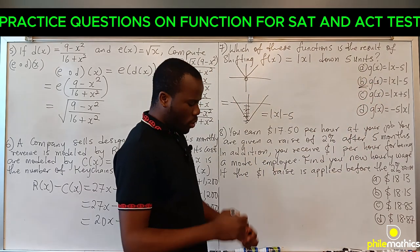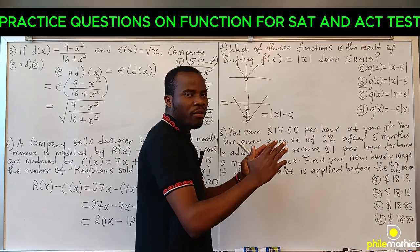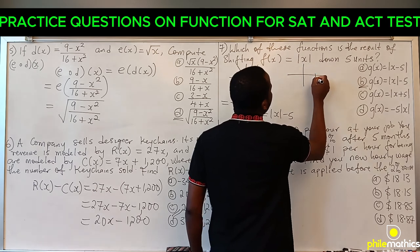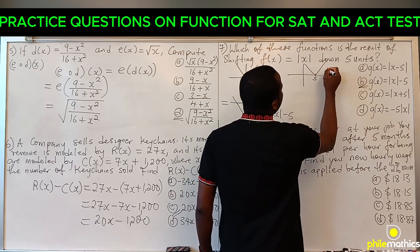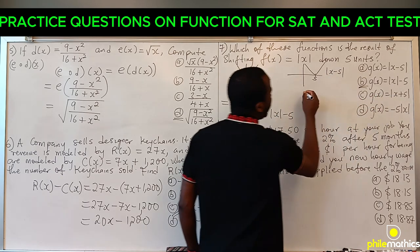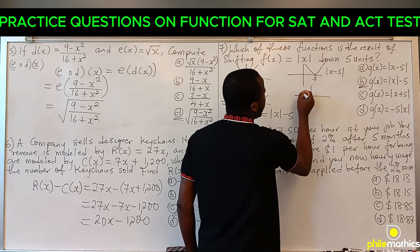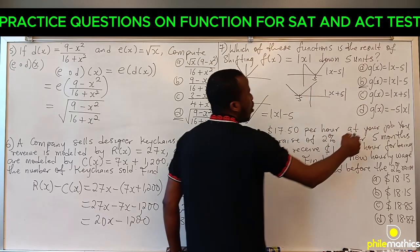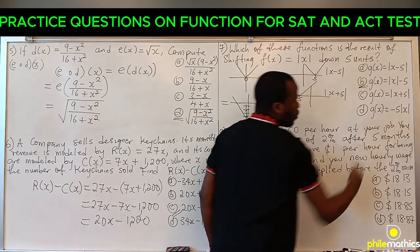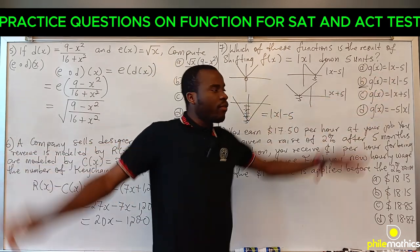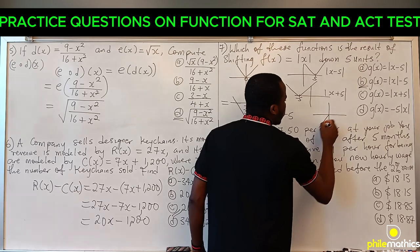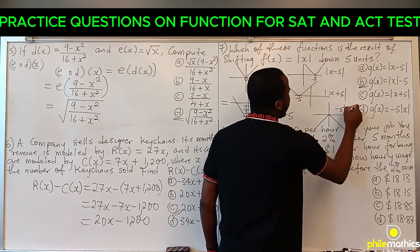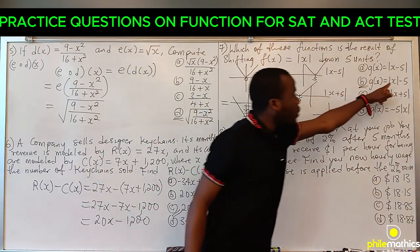For the other options: g(x) = |x - 5| means a shift of the graph to the right by 5 units. g(x) = |x + 5| means a shift to the left. The option with -5|x| flips the graph upside down and scales it by 5. The correct answer for shifting down by 5 units is |x| - 5.